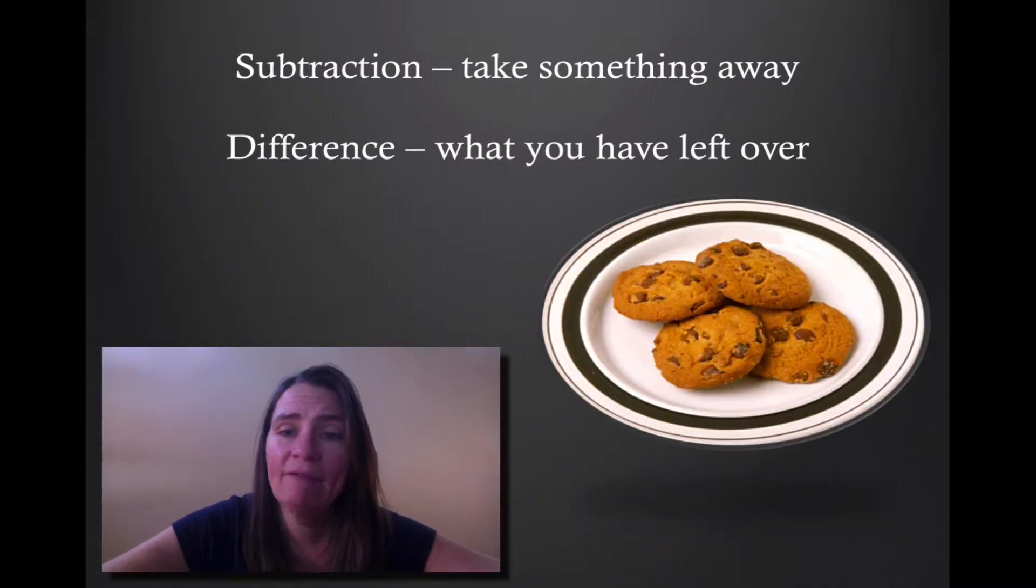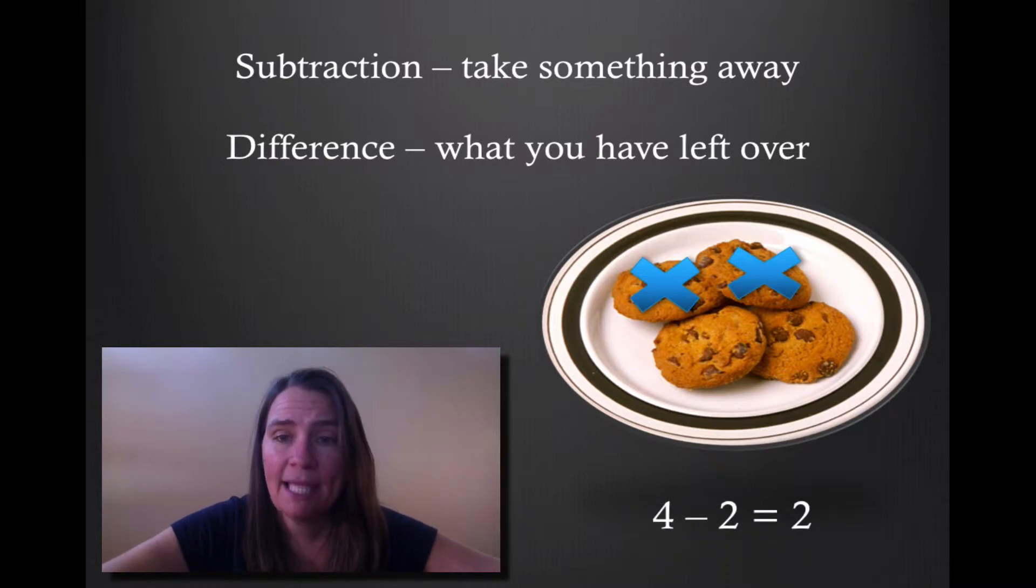If I have a plate of cookies, there are four cookies here. If I take away one cookie, two cookies, how many cookies do I have left? Two! That's the difference. Let's look at that in numbers. Four cookies take away two cookies equals two cookies left over.